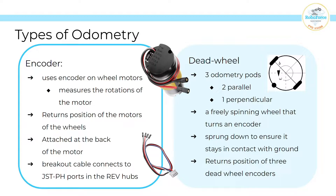The second one is dead wheel odometry. This type of localization requires three odometry pods — two in parallel and one perpendicular — because it needs to be able to measure laterally and straight. A freely spinning wheel is connected to the encoder and then sprung down to ensure that it's always in contact with the ground. This type of odometry returns the position of three different dead wheel encoders.